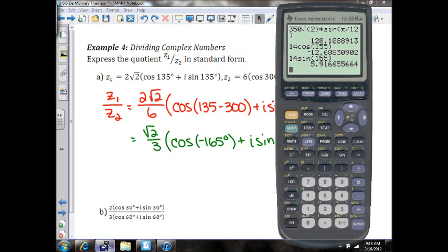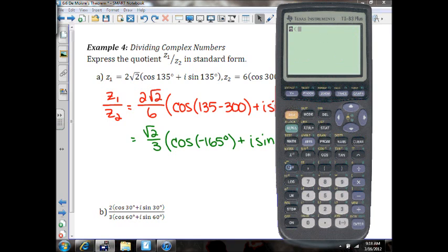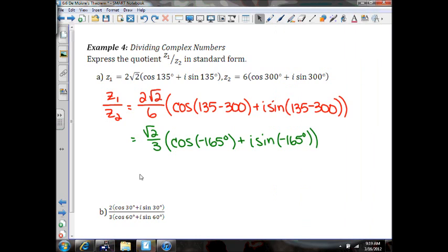And again, we need to make sure our calculator is in degree mode, which it already is from the previous problem. So we'll take square root of 2 divided by 3 times the cosine of negative 165. Cosine of negative 165 degrees is actually in the third quadrant, so it makes sense that I have a negative number here. So Z1 divided by Z2 is going to be about negative 0.46.